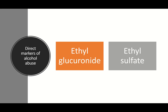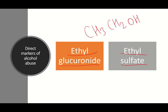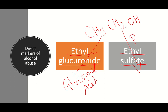The direct markers of alcohol abuse are ethyl glucuronide and ethyl sulfate. Alcohol is ethanol (CH₃CH₂OH). In our body, alcohol is conjugated with glucuronic acid to form ethyl glucuronide, and when it is sulfated — the donor of the sulfate group is PAPS — you get ethyl sulfate. These are the direct markers of alcohol abuse.